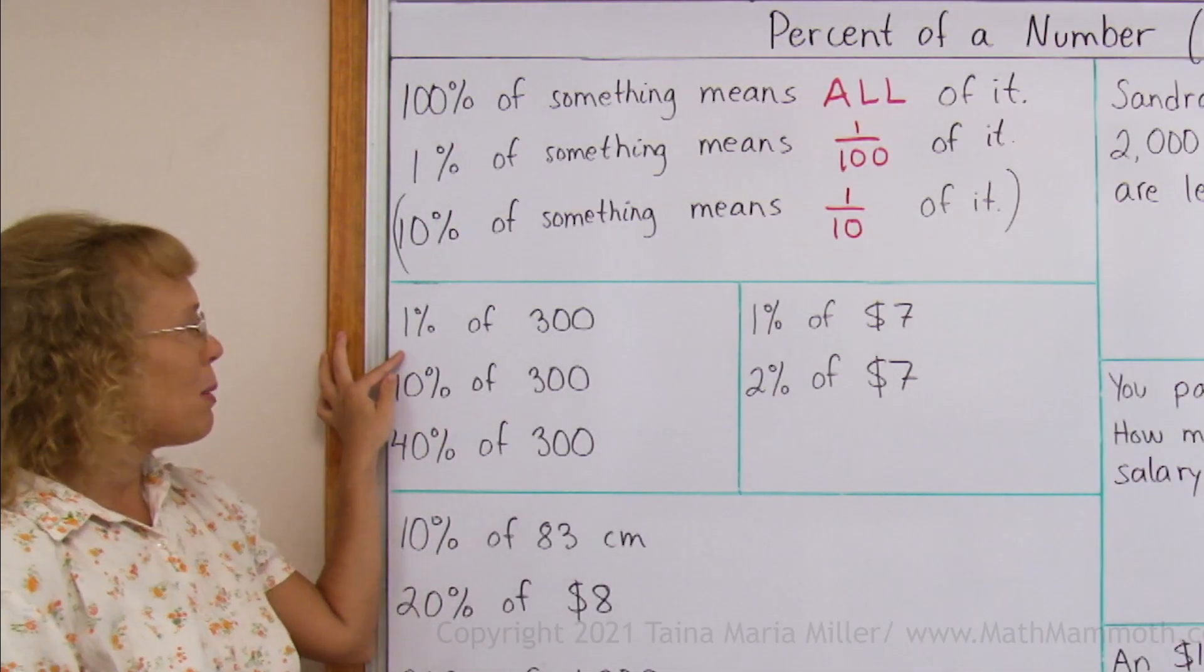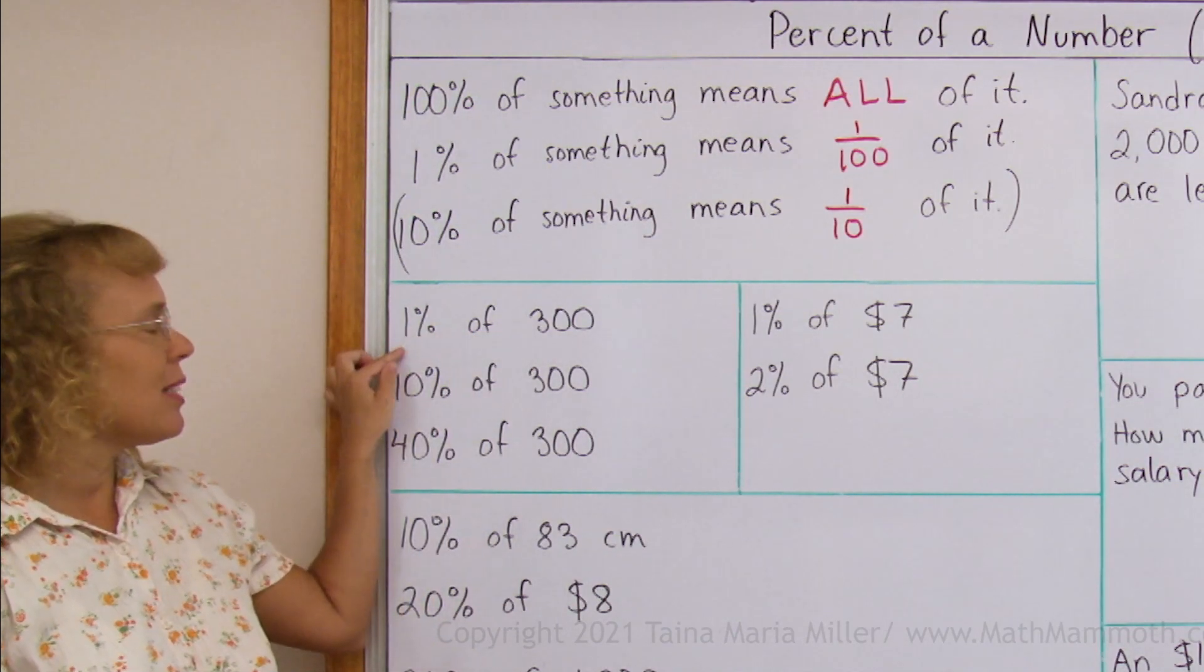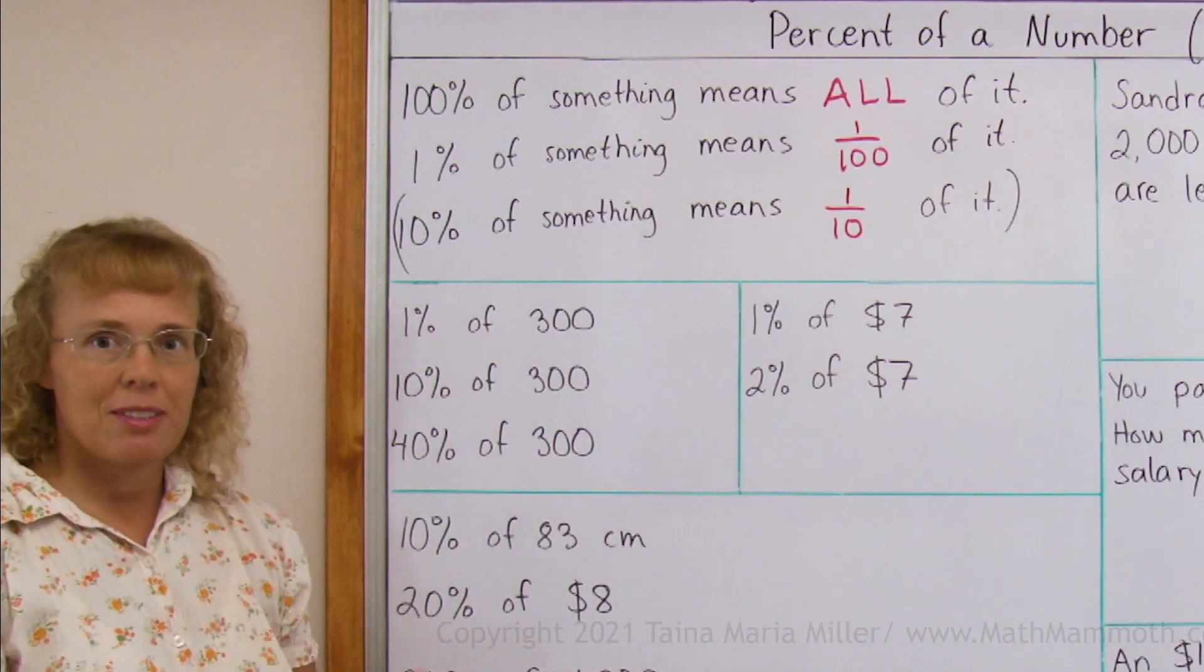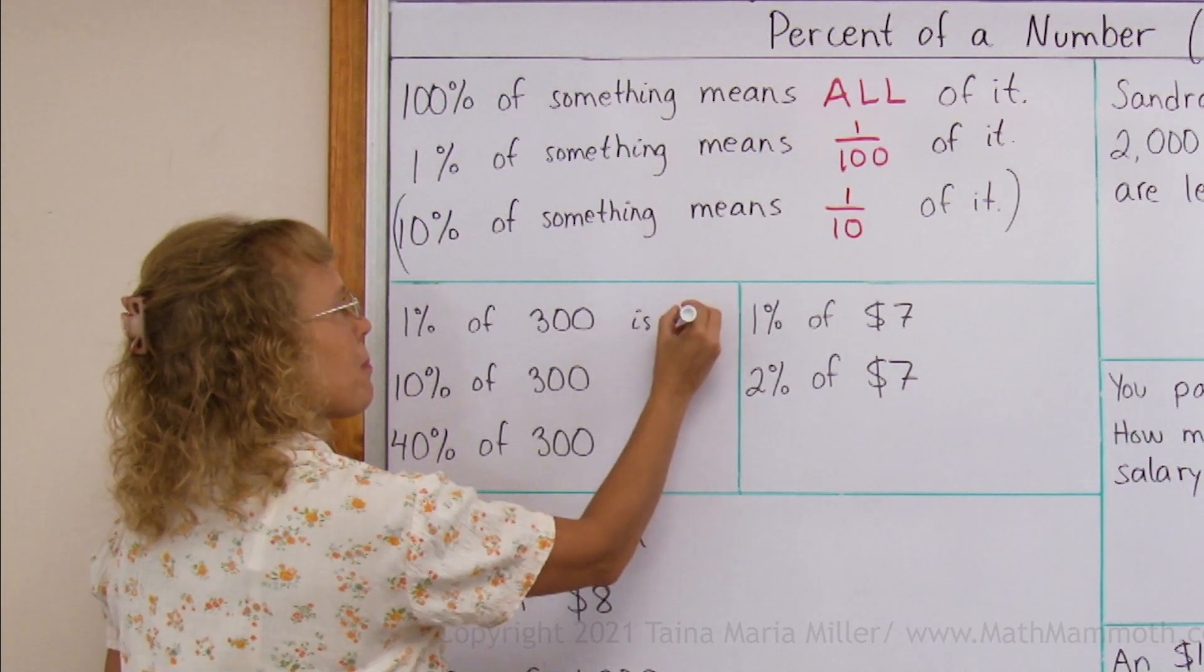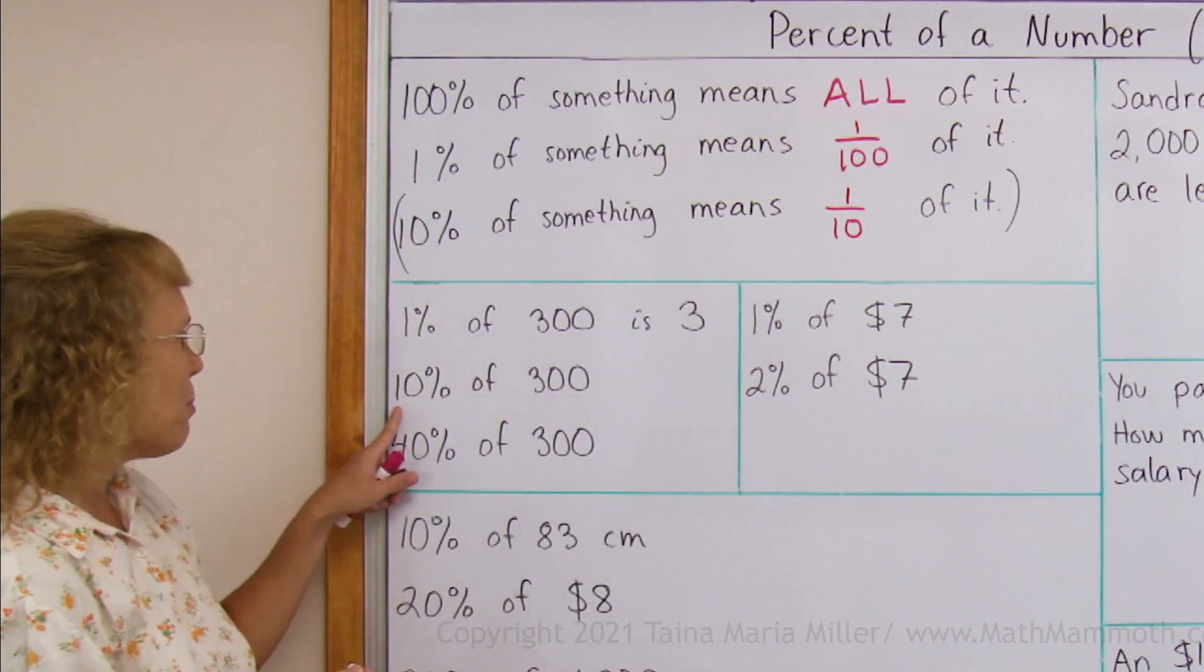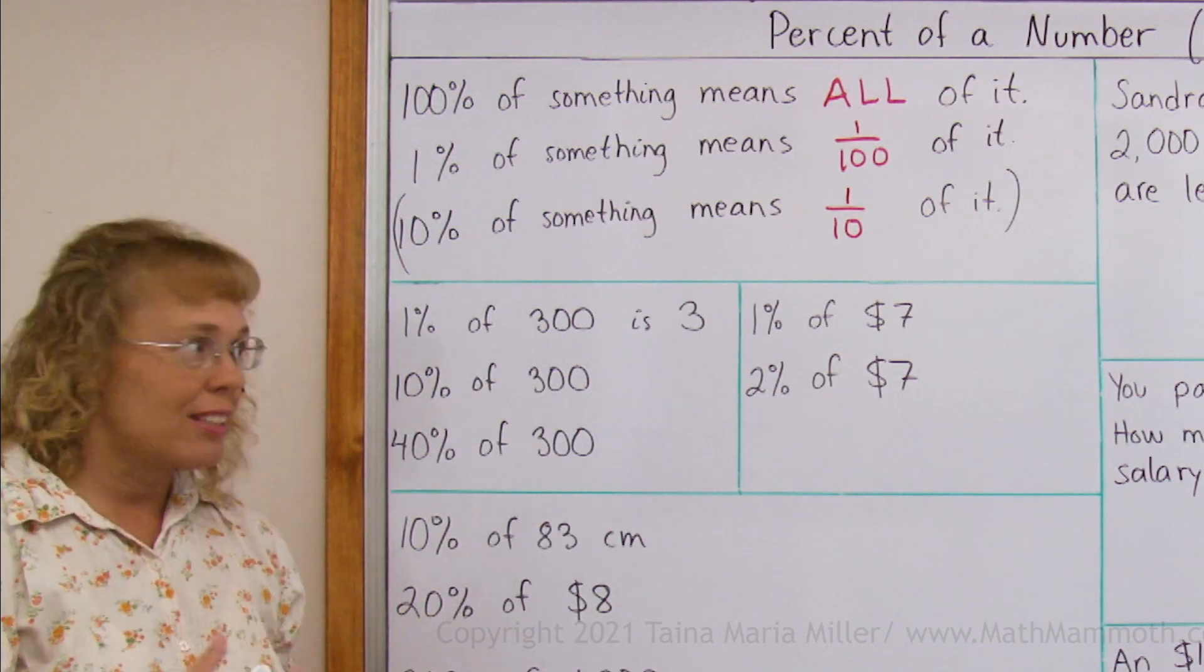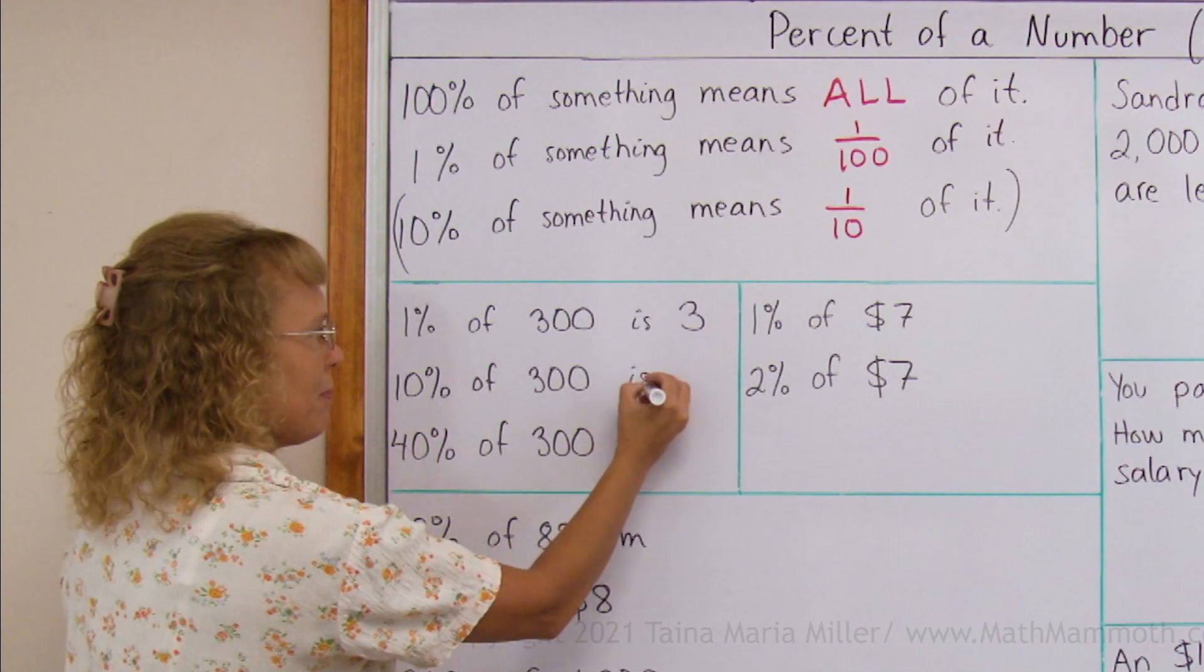Let's say I need to find one percent of three hundred. One percent means one-hundredth part of it. So I take three hundred divided by hundred. That's one-hundredth part of it. So it is just three. How about ten percent of three hundred? Now ten percent is one-tenth of the quantity. I take this divided by ten, so we get thirty.